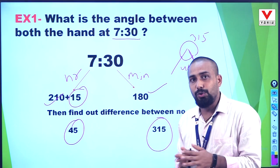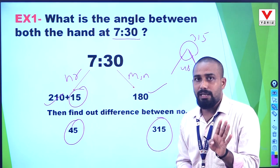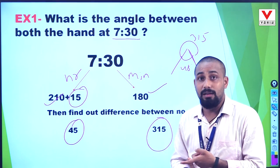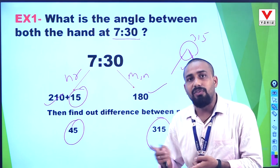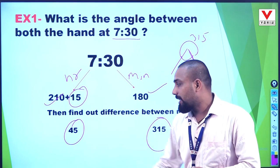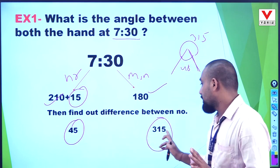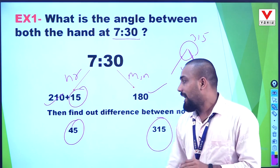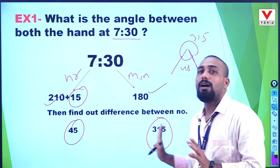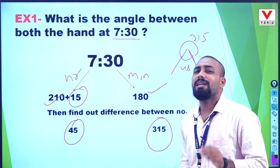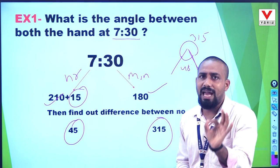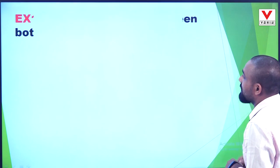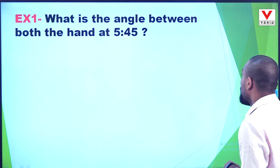So the two possible angles are: the inner angle is 45 degrees and the outer angle is 360 minus 45 equals 315 degrees. Depending on your options, it may be 45 or 315. If the question asks for the normal angle, choose accordingly — it takes max 5 to 10 seconds. Let me show the next example: 5:45.